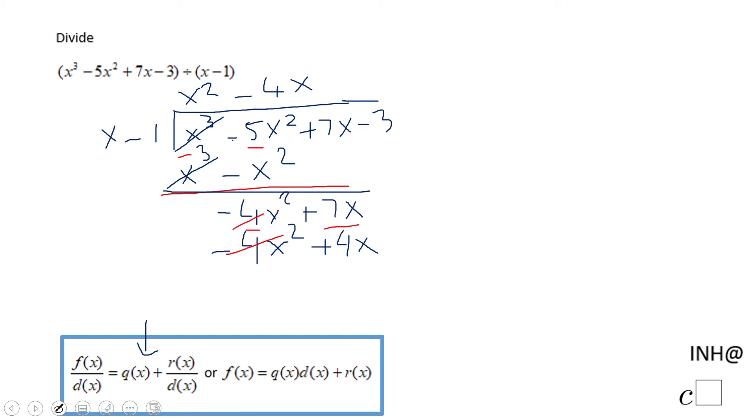And these two gentlemen cancel out, and we're going to get 7x minus 4x, which is 3x minus 3. We're going to do the same process. What should I multiply x by to get 3x?